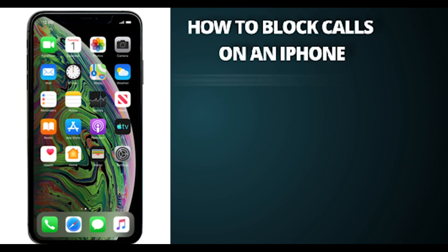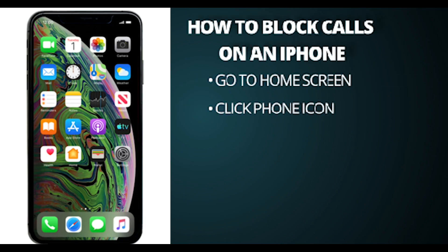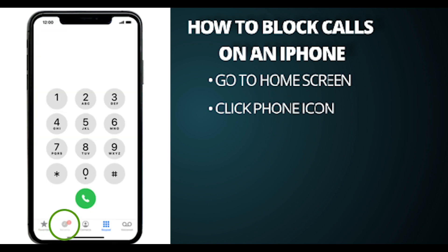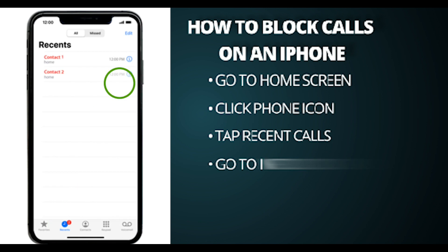Step one, go to your home screen. Step two, click your phone icon. Step three, tap recent calls. Step four, go to the information icon of the number you want to block.